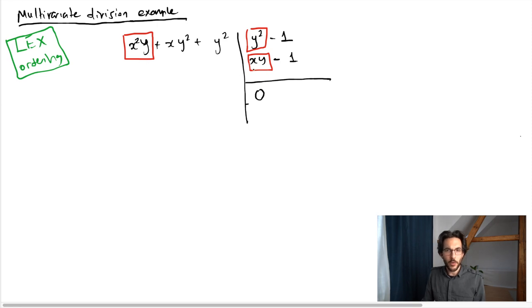x squared y divided by x y is x, and now I write this over here. So my second quotient term accumulated an x. This time I do what I did before: x times x y minus 1 goes here. Then I subtract it from the first polynomial that I started with. So I get, using the lex ordering, x y squared plus x plus y squared.